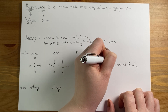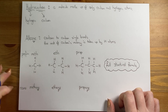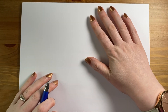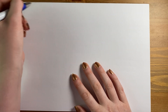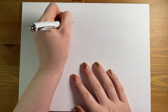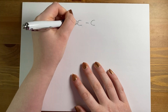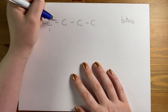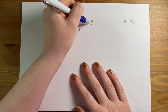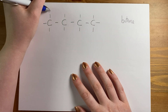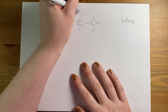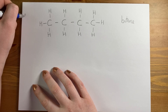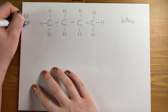You need to be able to draw full structural formula for any of the alkanes. We don't need to worry about shape here — you'll know from bonding that methane is tetrahedral, but when drawing these we draw them in straight lines. Let's take butane as an example: four carbons, each forming four bonds in total. Going around and adding in all the hydrogens fills all the valencies — this is the full structural formula.